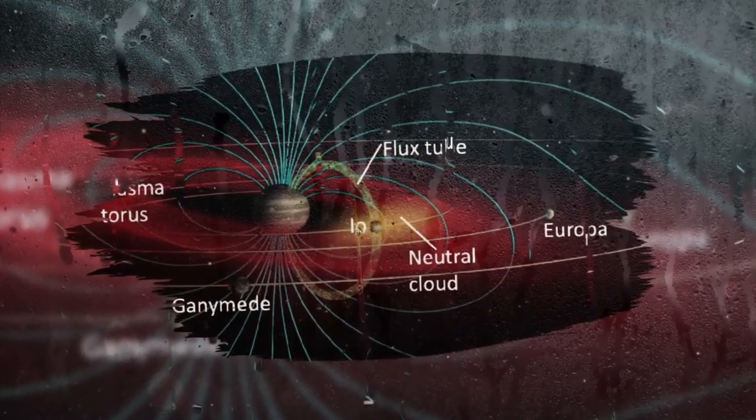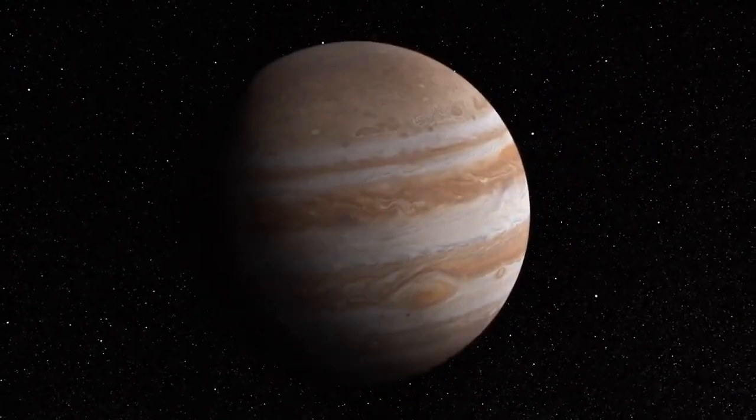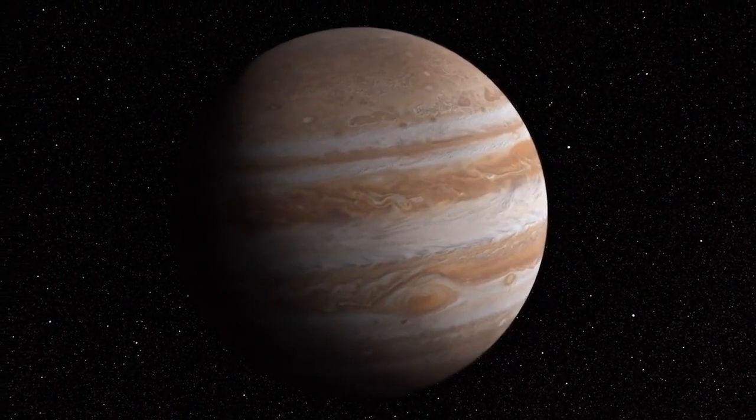Jupiter's magnetosphere also interacts with a steady solar wind to create a bow shock, a collection of radiation that can hurt a spaceship. As the third brightest thing in our solar system after our moon and Venus, you can see Jupiter with the naked eye.